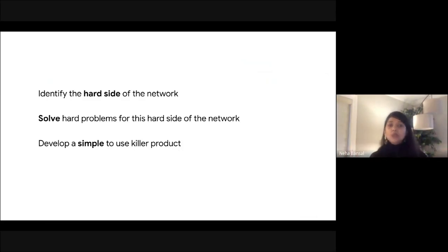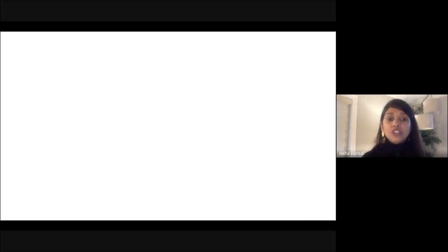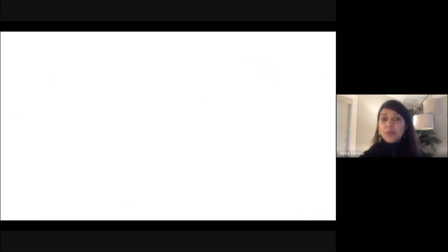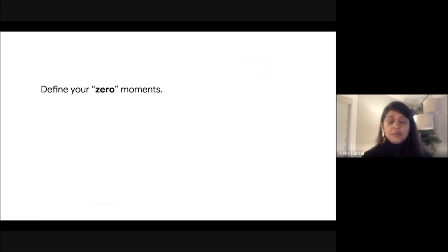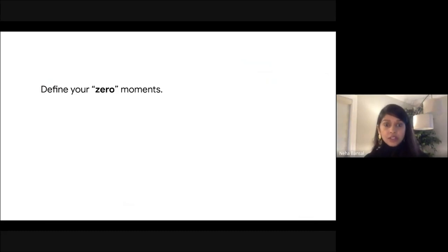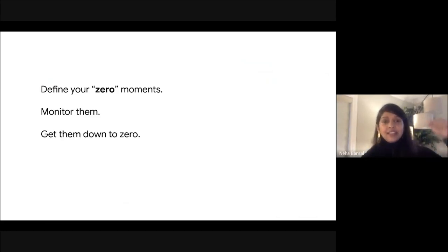How do you know if you have succeeded in creating magic moments for your atomic network? Magic moment is a nice concept, but it's even more useful if you can measure it. The best way might be surprising: start with the opposite of magic — the moments where the network broke down — and then start solving from there. First, define your zero moments. For example, when Uber started at the Caltrain station, they gave drivers an app that recorded ride completion. Anytime a rider didn't match with a driver, it was recorded as a zero. They continuously iterated to eliminate these zero moments. Define your zero moments, monitor them, and get them down to zero.